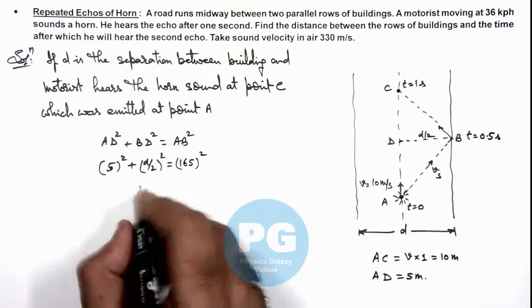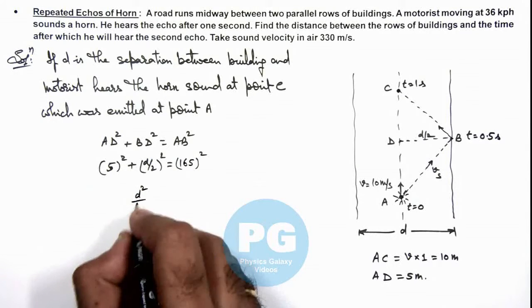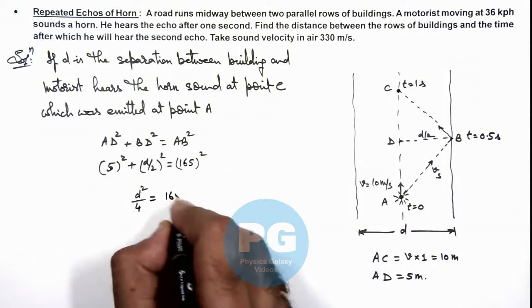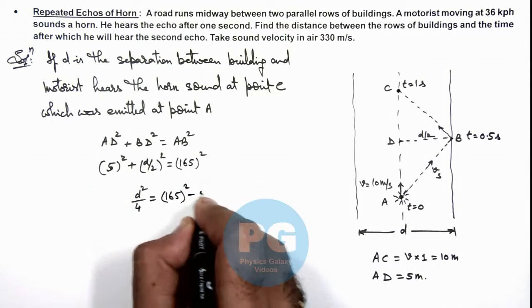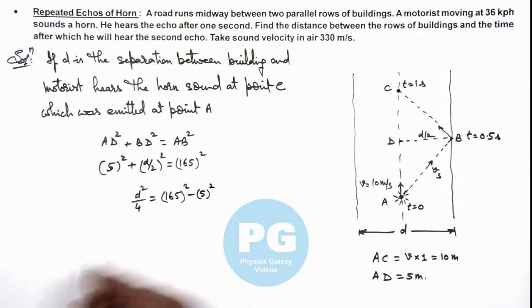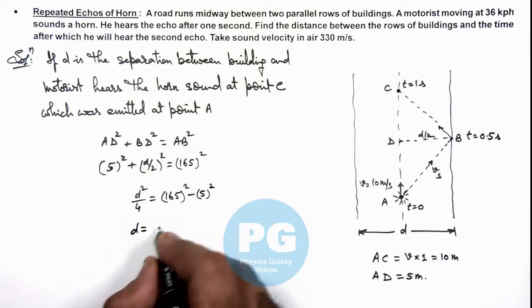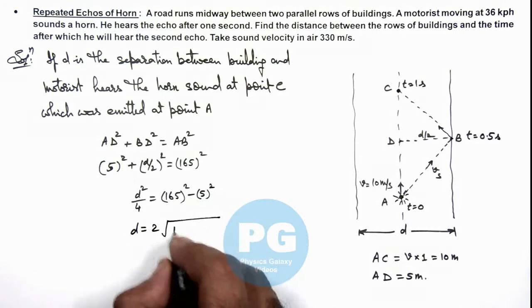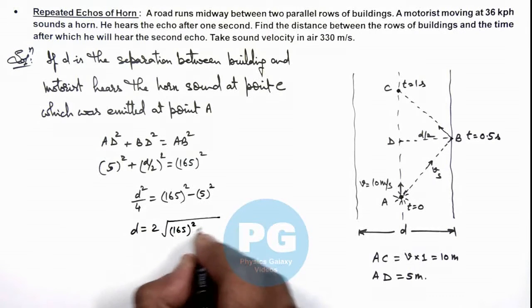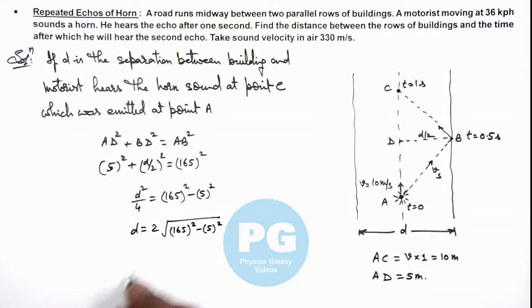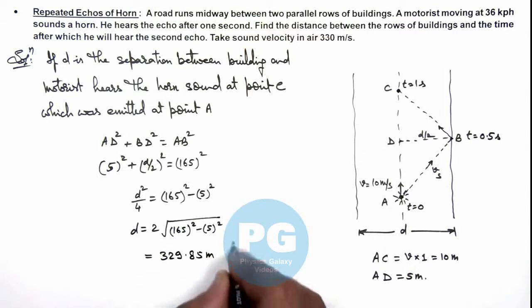So simplifying this, it gives us d²/4 is 165² minus 5², or the value of d we are getting is twice of root 165² minus 5². If you simplify, this numerically gives 329.85 meters, that is the result of this problem.